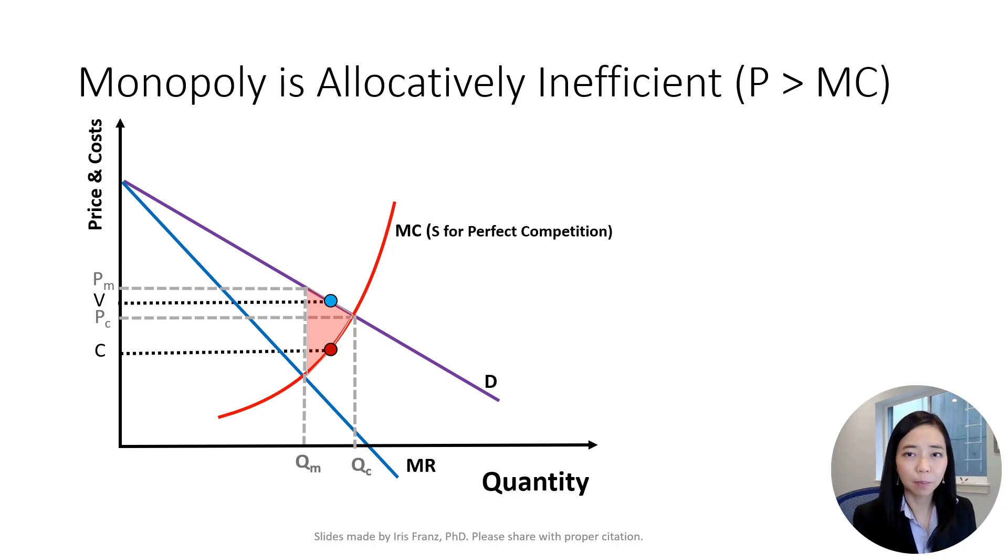Why wouldn't the monopolist produce this unit given that the benefit V outweighs the cost C? Because the monopolist's marginal revenue for this unit R is lower than the marginal cost C. To maximize profit, the monopolist will not produce this unit.